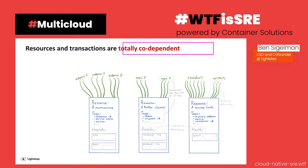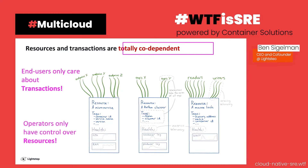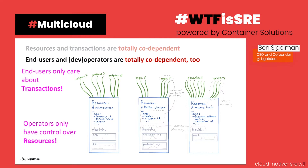These two things are completely codependent. End users only care about transactions — that's the only thing that matters to them. But operators and engineers only have control over resources. As a good engineer, you care about your end user, but the only thing you can actually control is a resource. What the end user does — the transaction — is something you can hope for and measure, but can't directly control. The only thing you can directly control is which code is shipped and how many instances are running.